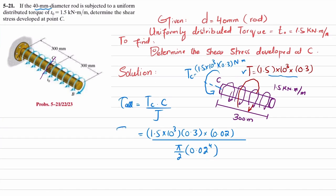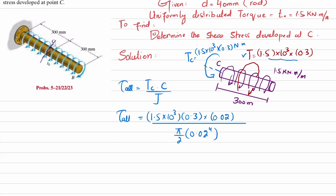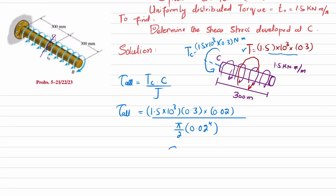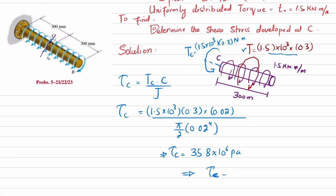After substituting and calculating, the shear stress at point C is 35.8 × 10⁶ pascals, which simplifies to 35.8 megapascals.